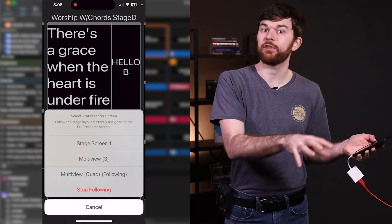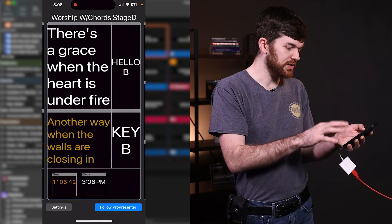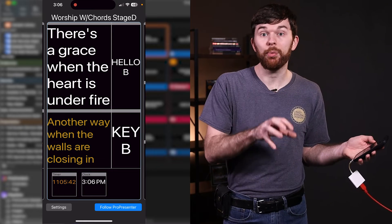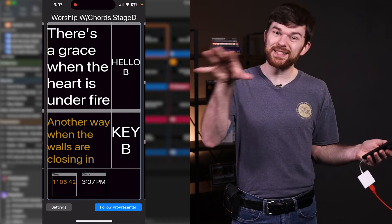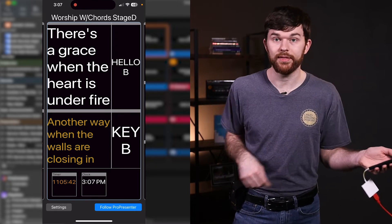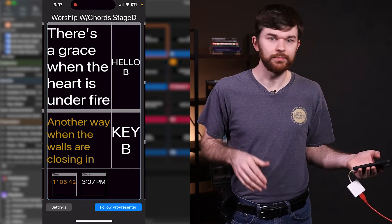So if I do that, I can see, it will follow whatever ProPresenter is doing. So I'll just follow stage screen one and that's going to be our output to our team. So if we change the stage display layout, that's the output we're going to change. So that's where this is going to follow. So that's really cool. I think that's a good summary of the iPhone app.